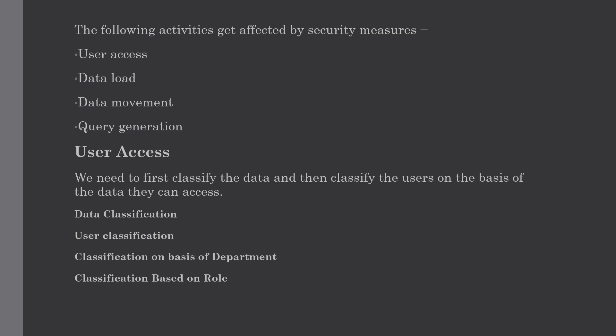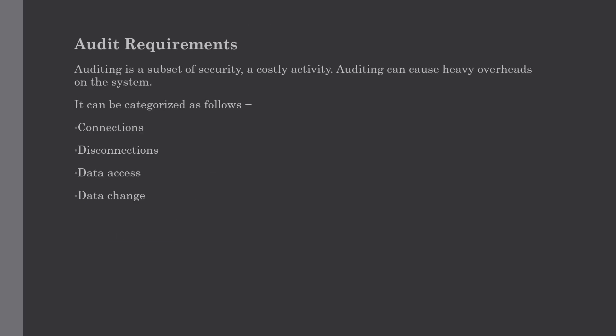The last classification is based on role. If data is generally available to all departments, it is useful to follow a role access hierarchy. In other words, if data is generally accessed by all departments, we will apply security restrictions as per the role of the user.